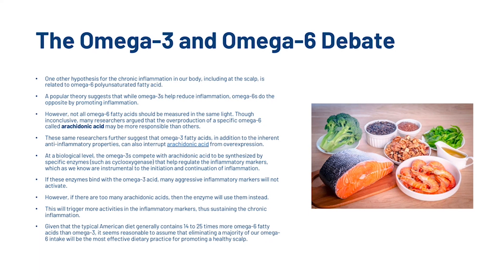At a biological level, omega-3s compete with arachidonic acid to be synthesized by specific enzymes that help regulate inflammatory markers — which are instrumental to the initiation and continuation of inflammation. If these enzymes bind with the omega-3 acid, many aggressive inflammatory markers will not activate. However, if there are too many arachidonic acids, the enzyme will use them instead, triggering more inflammatory marker activity and thus sustaining chronic inflammation.